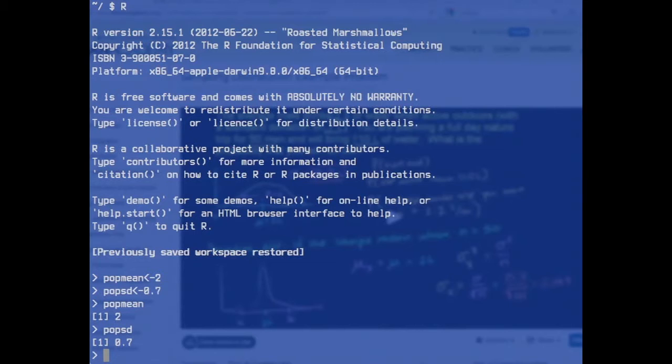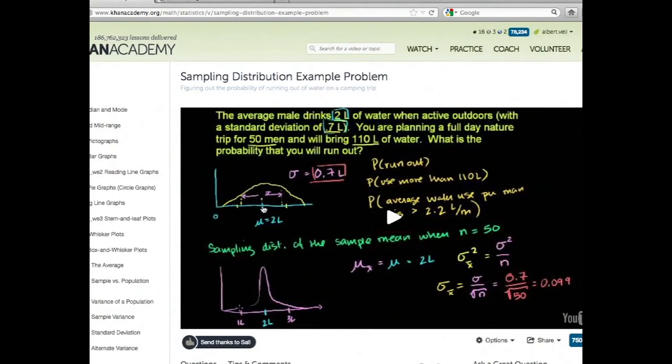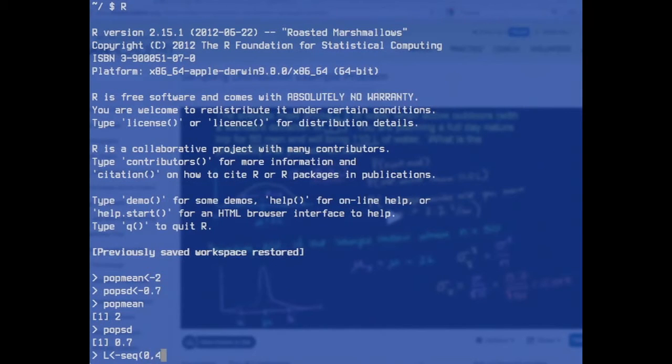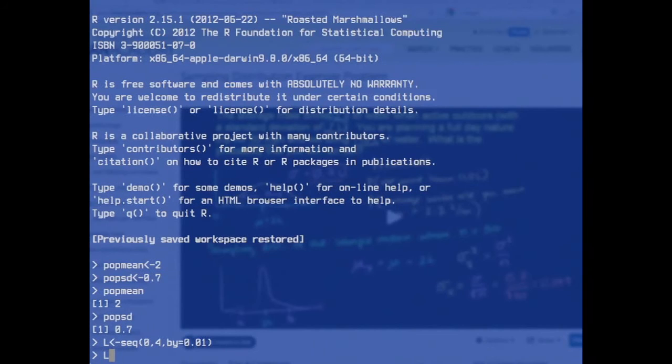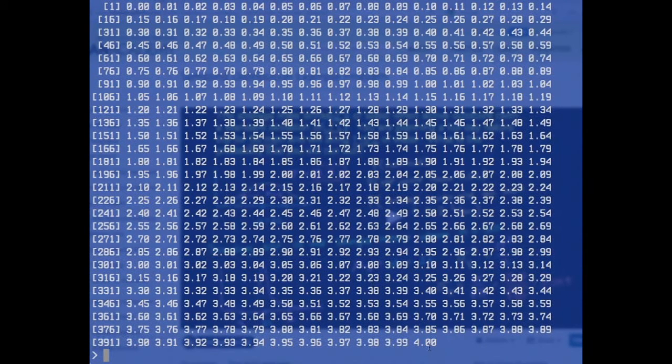If I want to draw a normal distribution, I can first say this variable L is just a sequence from 0 up to 4, with 2 in the middle. Going by small steps of 0.01 liters. So L here goes from 0 all the way up to 4.